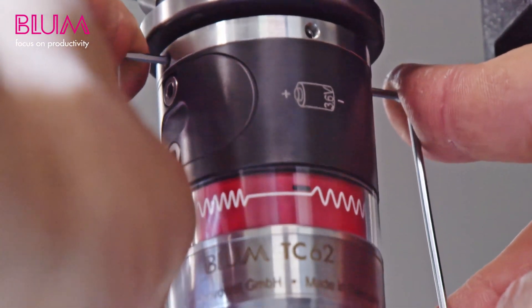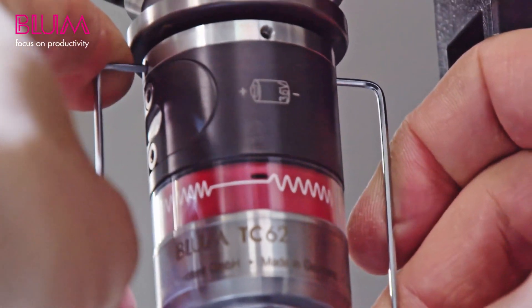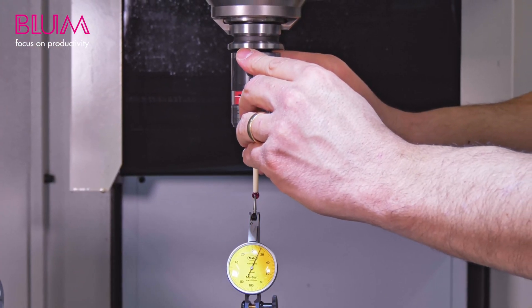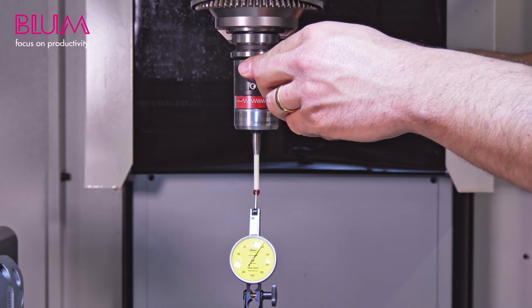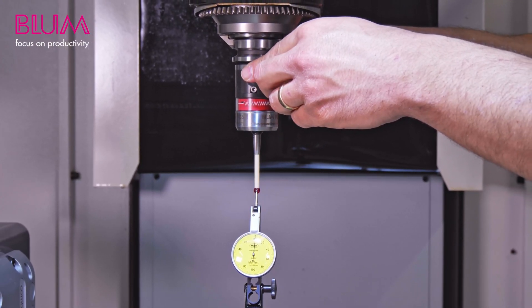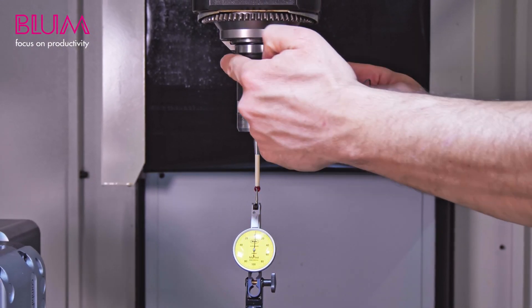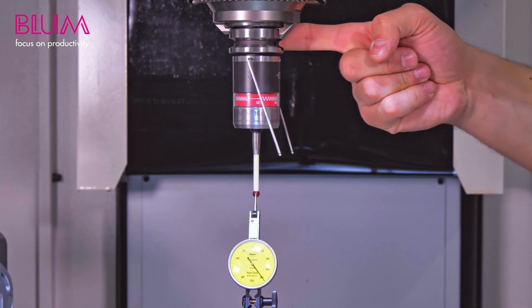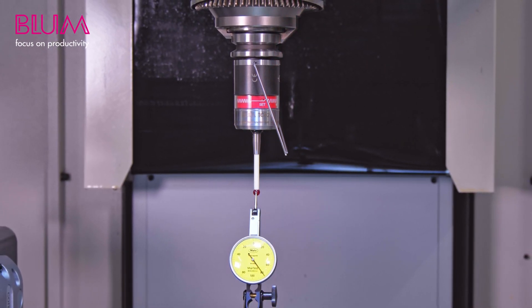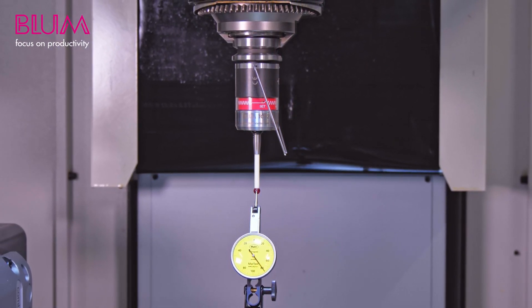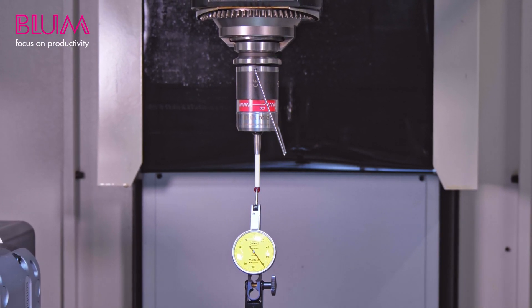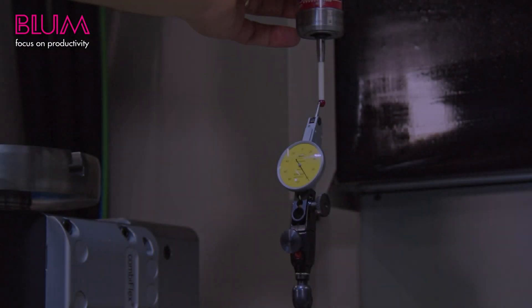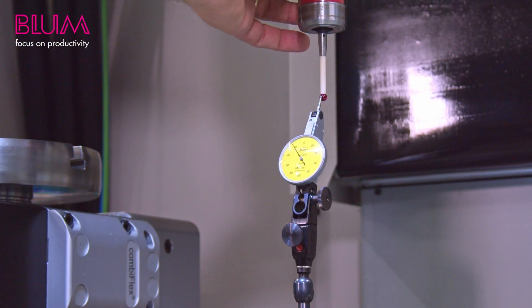As you observe the needle's movement, now we have the ability to adjust the probe accordingly. We're going to rotate the entire assembly by 180 degrees. Naturally, you can leave the keys in place securely during the rotation and diligently verify the runout on opposing sides in an alternating manner.